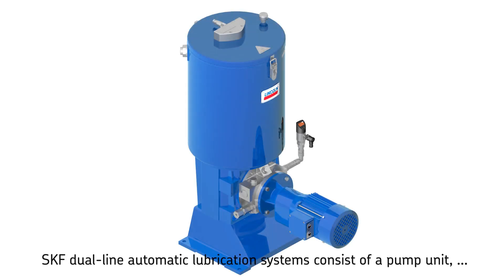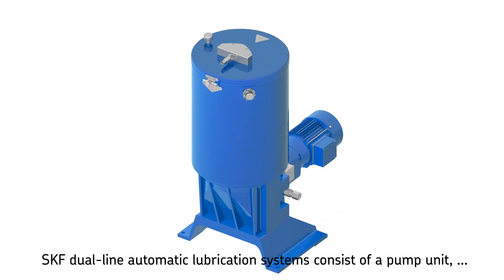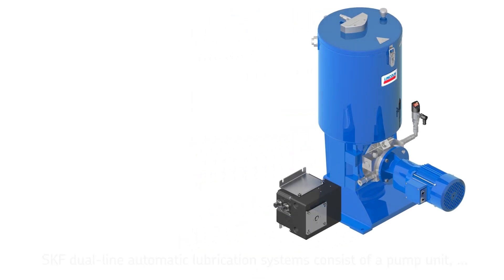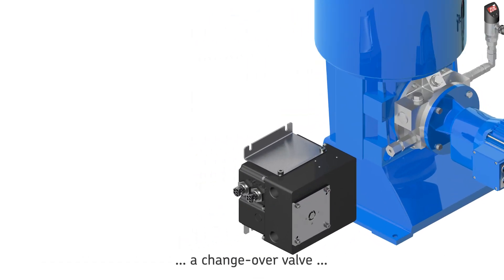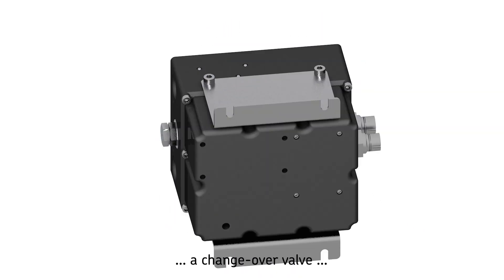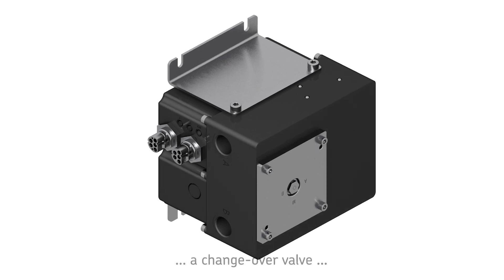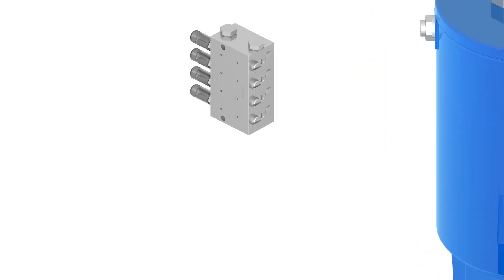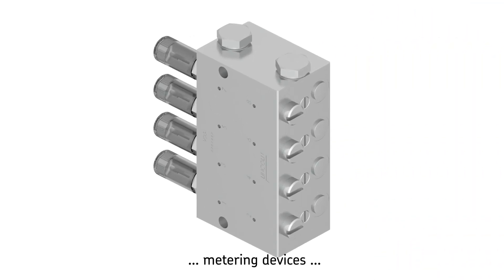SKF dual-line automatic lubrication systems consist of the following components: a pump unit that includes an analog or digital pressure gauge, such as the electrically operated ZPU24 or similar product, a changeover valve such as the EMU3, and several dual-line metering devices.